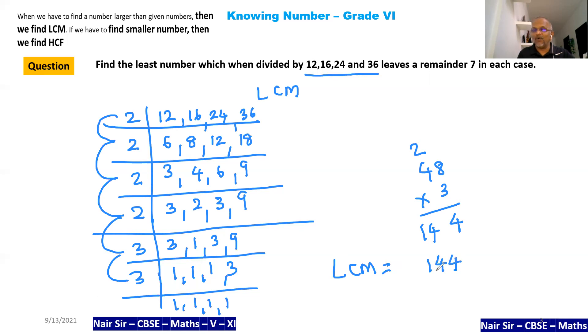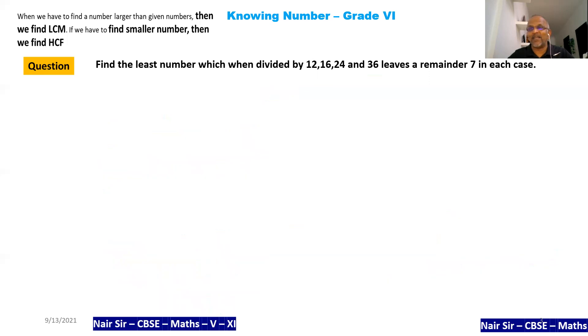And what am I supposed to add? I'm supposed to add 7 to this. And what will I get? I will get 151. This is my answer. Now let us go to a cleaner slate that you can write down into your notebook.